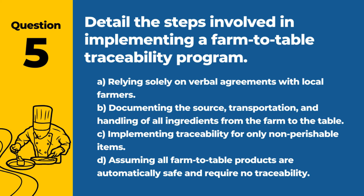Question 5. Detail the steps involved in implementing a farm-to-table traceability program. a. Relying solely on verbal agreements with local farmers. b. Documenting the source, transportation, and handling of all ingredients from the farm to the table. c. Implementing traceability for only non-perishable items. d. Assuming all farm-to-table products are automatically safe and require no traceability. Answer: b. Documenting the source, transportation, and handling of all ingredients from the farm to the table. Traceability is key to ensuring food safety and quality in farm-to-table operations.